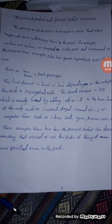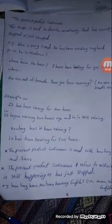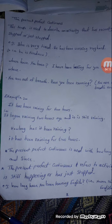These examples show how the present perfect can describe something that occurred or was a state of being at an unspecified time in the past. The present perfect continuous tense is used to describe an activity that has recently stopped or just stopped.